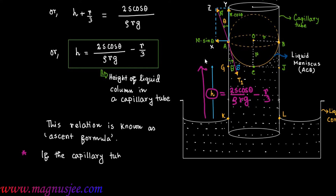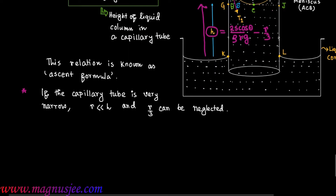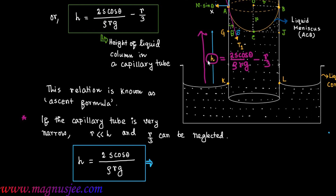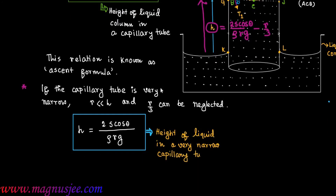Additional information: if the capillary tube is very narrow, the radius r is much less than h, so r/3 can be neglected with respect to h. Therefore, h = S cosθ / (ρrg), which is the height of liquid in a very narrow capillary tube.